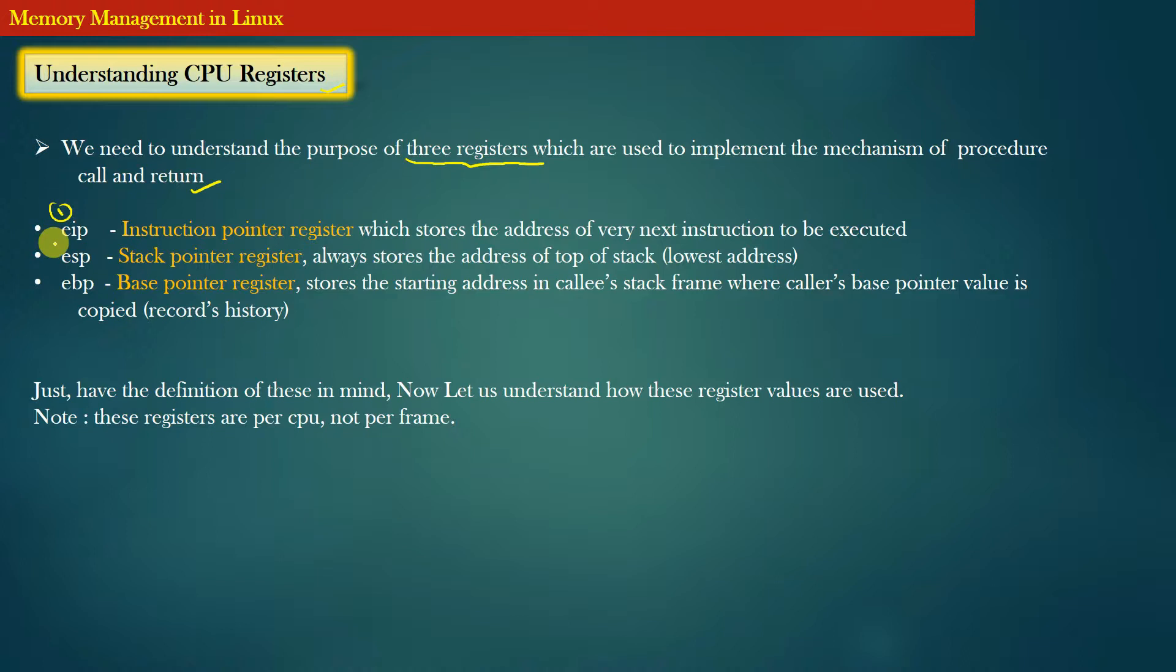The first register is called the instruction pointer register. This register stores the address of the very next instruction to be executed. In some implementations, this register can also be used to store the address of the current instruction which is being executed. If that is the case, we simply add one to the value of this instruction pointer, which gives us the address of the next instruction.